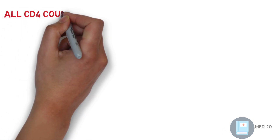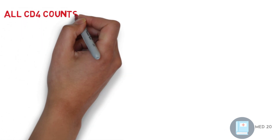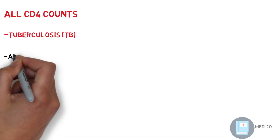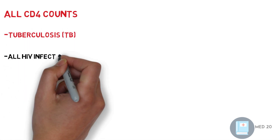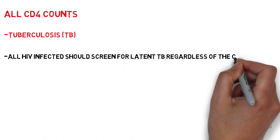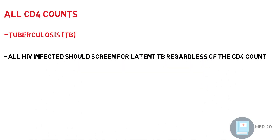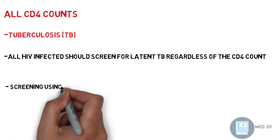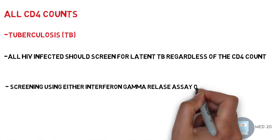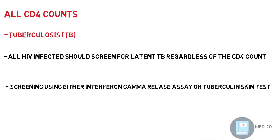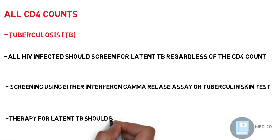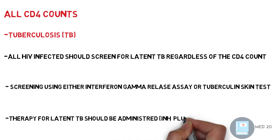For antimicrobial therapy at all CD4 counts: TB or tuberculosis — all HIV-infected individuals should be screened for latent TB regardless of CD4 count. Screening uses either an interferon gamma release assay or tuberculin test. Therapy for latent TB should be administered as INH plus pyridoxine.